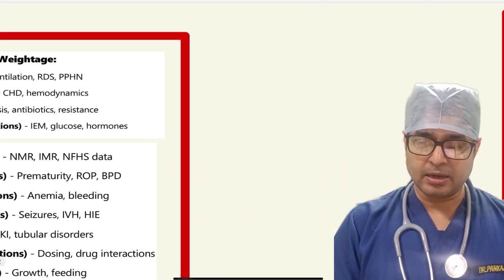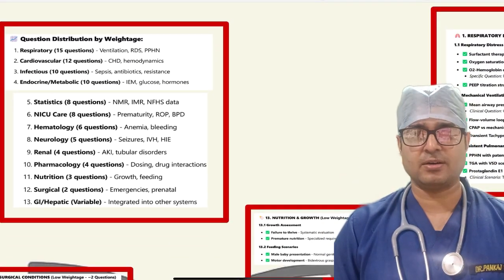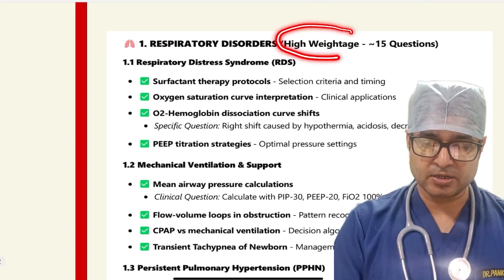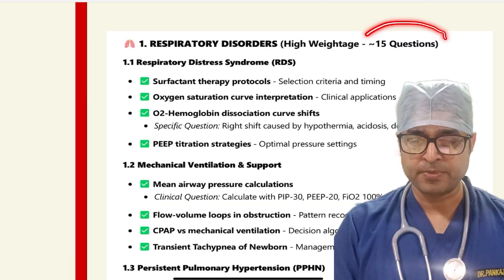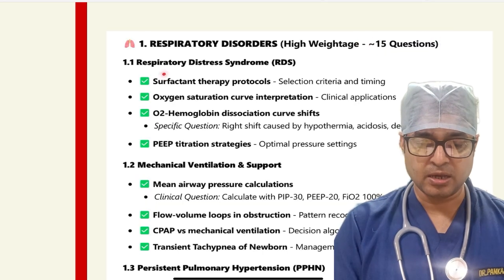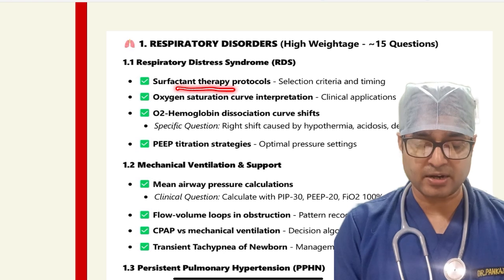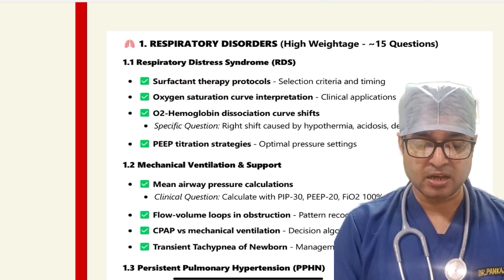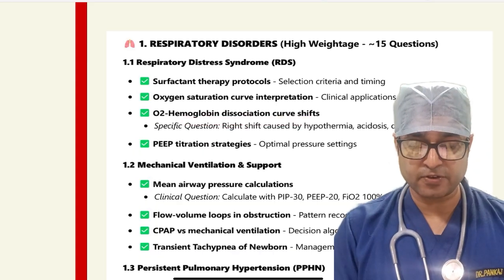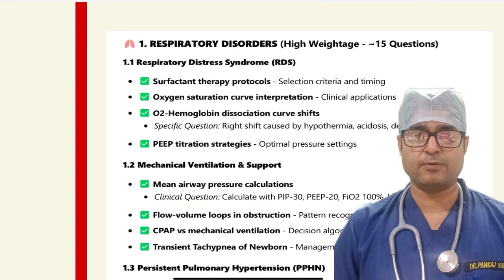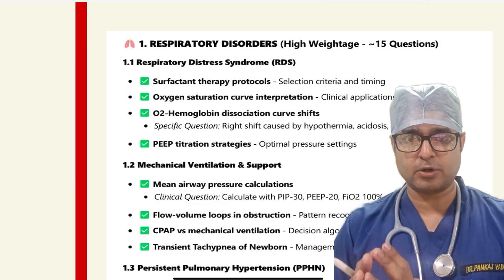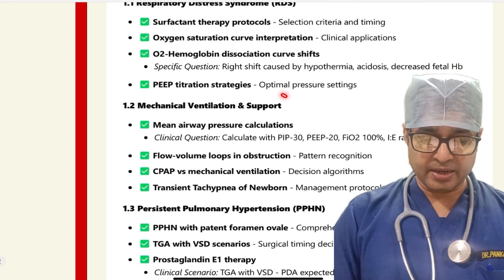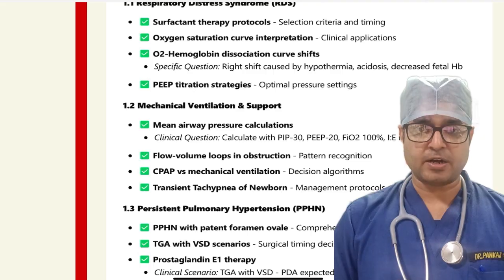We will dissect each topic and understand what the examiner usually thinks while making these papers. Respiratory disorders have high weightage — approximately 15 cautions. RDS has many questions including surfactant therapy protocols, oxygen saturation curve interpretation, oxygen-hemoglobin dissociation curve shift, and PEEP titration strategies. These topics must be thoroughly covered for future exams including NEATSS and INSS. Mechanical ventilation is another important aspect.